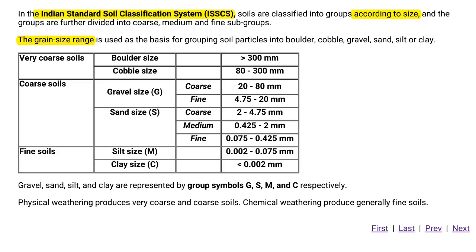Next, we are going to see fine soils. Fine soils are further classified into two types, namely silt size and clay size. Silt size has a grain size range of 0.002 to 0.075 mm, and clay size has a grain size range of less than 0.002 mm.